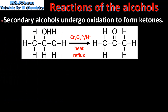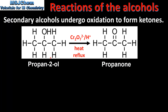Next we look at secondary alcohols. Secondary alcohols undergo oxidation to form ketones. Here we have the oxidation of a secondary alcohol to form a ketone. The oxidizing agent is acidified potassium dichromate. The reaction conditions are heat under reflux.